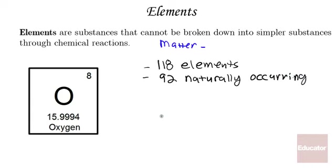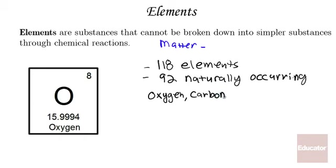The remaining elements can be created in a particle accelerator. However, only 92 are naturally occurring. Although there are 92 naturally occurring elements, in biology we're going to be focusing on mainly four elements. Living organisms are composed mainly of oxygen, carbon, hydrogen, and nitrogen.